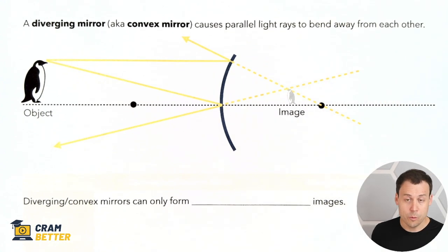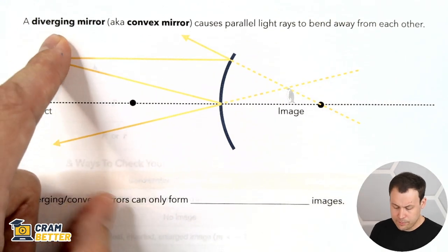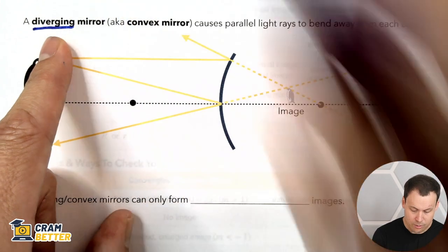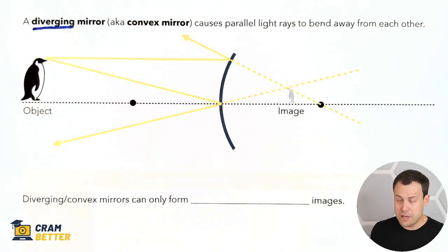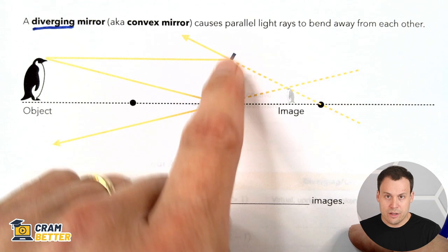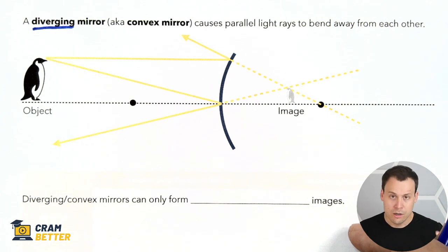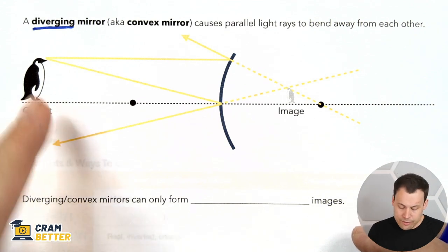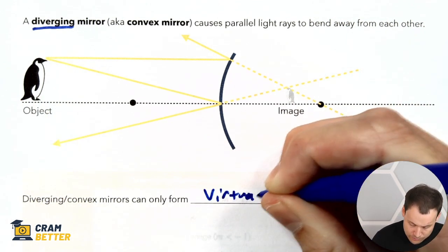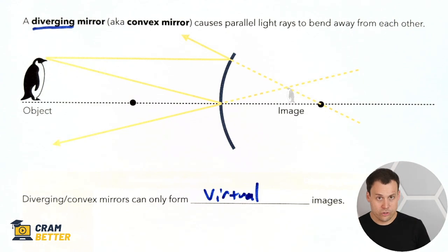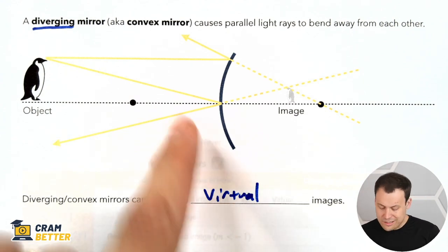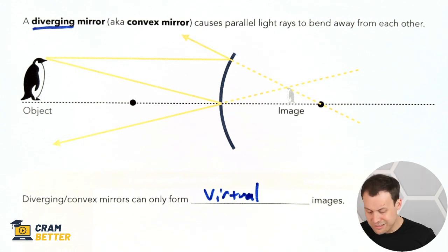A diverging mirror — also called convex — is like the little mirror pasted onto the side-view mirror of a big truck, those bulging-out mirrors. Diverging mirrors form only virtual images, just like a diverging lens. A diverging mirror is a lot like a diverging lens in that regard. Let's get to the cheat sheet for mirrors on the next page.